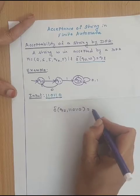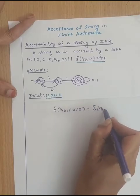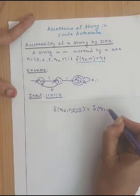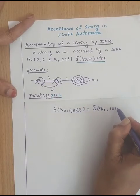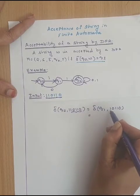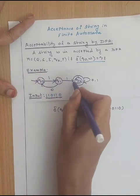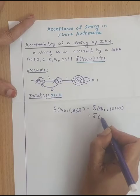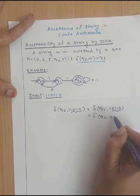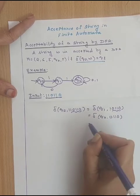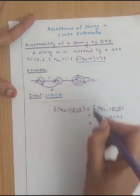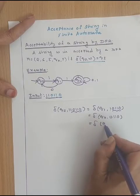Q0 on 1 goes to Q1. So delta of Q1, take the remaining part of the input string, that is 10110. Next check with Q1 and 1. Q1 on 1 goes to Q2. So delta of Q2, take the remaining part 0110. Next check with Q2 on 0. Q2 on 0 goes to itself, that is Q2.